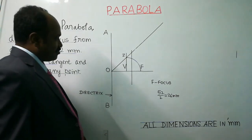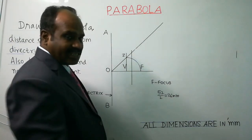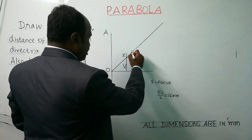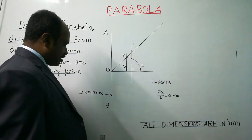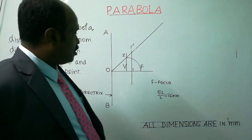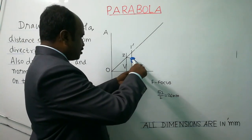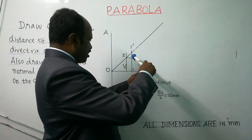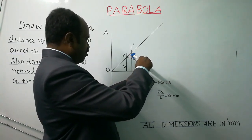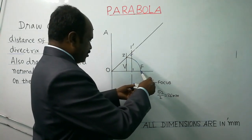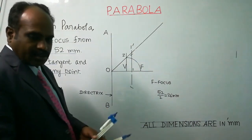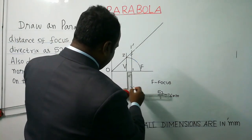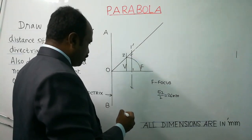Draw the first vertical line. Where it intersects with the axis (horizontal line), mark that point as 1. Where the line intersects with the inclined line OZ, mark that point as 1 dash. Now take your compass, take the distance 1 to 1 dash, and keeping F (focus) as center, draw an arc on the first vertical line, both above and below the axis. Where it intersects, mark those points as P1 and P1 dash.